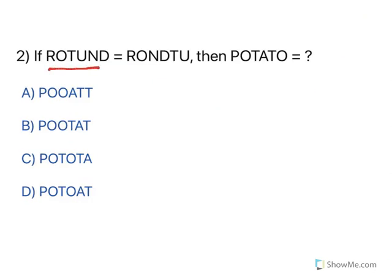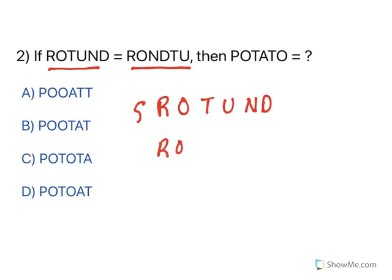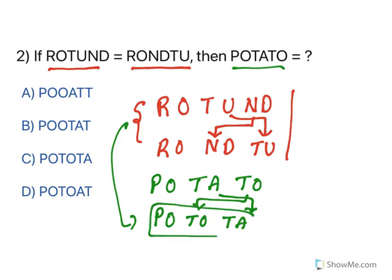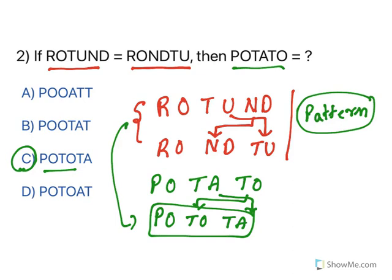Moving to the next one. If ROTUND equals ROND2 — look at this: R-O-T-U-N-D. The first two letters R-O remain the same. But what has happened? N-D, the last two, come here, and the next two come here. Now you need to do the same change to POTATO. P-O-T-A-T-O — the first two remain the same, then T-O comes here, and T-A comes here. So it becomes P-O-T-A. Everything is based on pattern recognition.